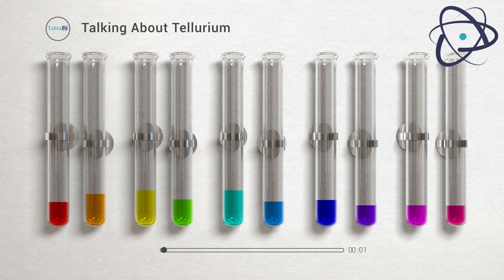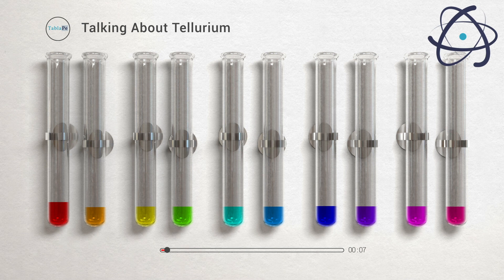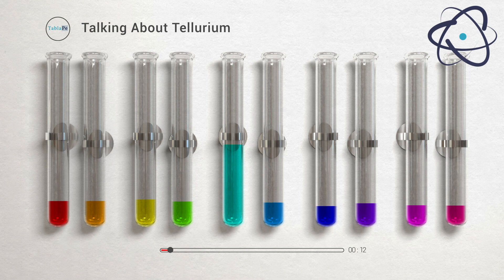Tellurium, or Te, is a semi-metallic chemical element with an atomic number of 52. Its name is derived from the Latin word tellus, which refers to the earth. Tellurium is a member of the chalcogen family and is chemically related to selenium and sulfur.